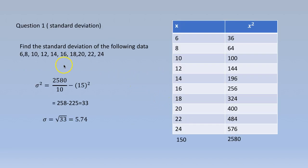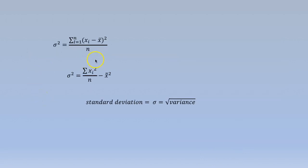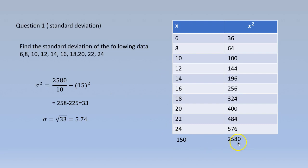Coming to the first question: find the standard deviation of the following data. We write the values in a column and calculate x squared. We add x and add x squared, then apply the formula: sigma squared equals summation xi squared by n minus x-bar squared. That gives 2580 by 10, with 10 values, minus 15 squared. So sigma equals the square root of 33, which is 5.74.